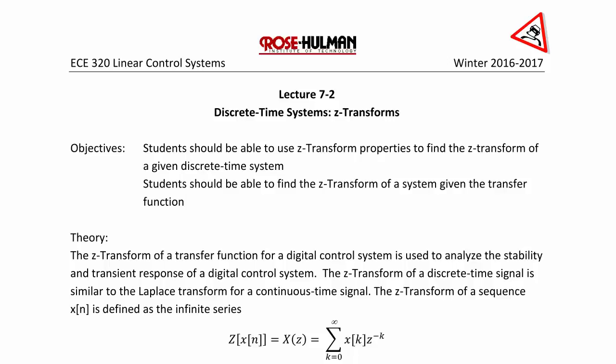Hello and welcome back. Today we will do Lecture 7-2 on discrete time systems Z-transforms. The objectives are for students to be able to use Z-transform properties to find the Z-transform of a given discrete time system, and to find the Z-transform of a system given the transfer function. The Z-transform of a transfer function for a digital control system is used to analyze the stability and transient response of a digital control system.